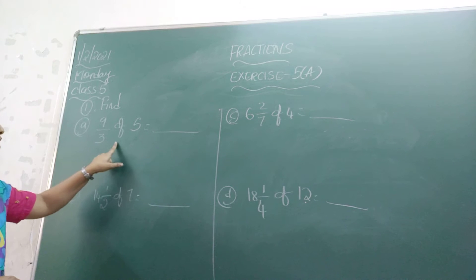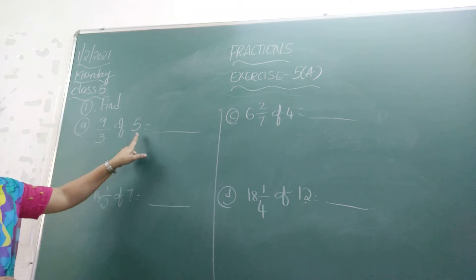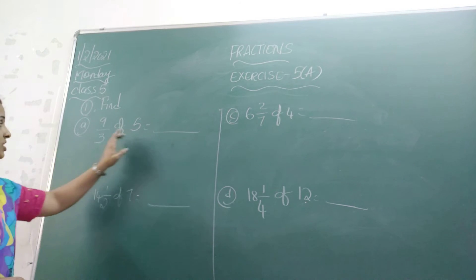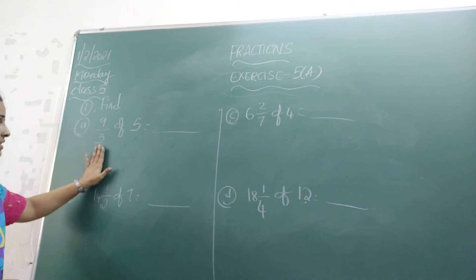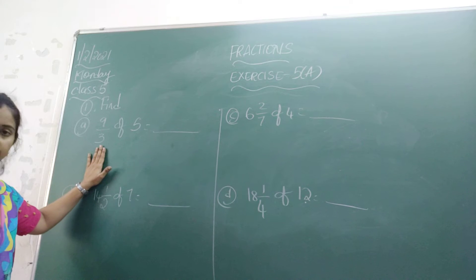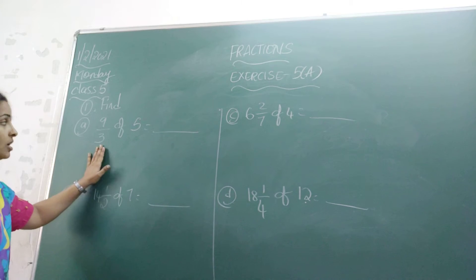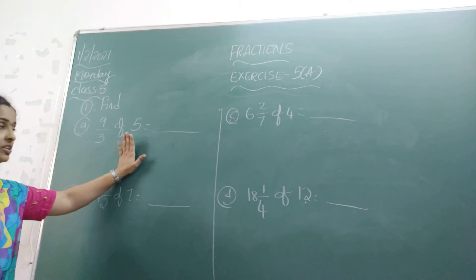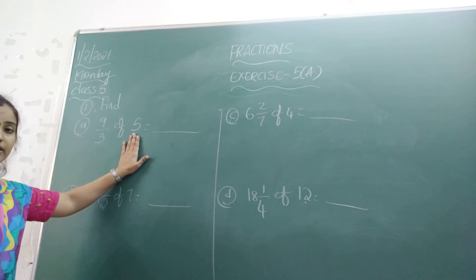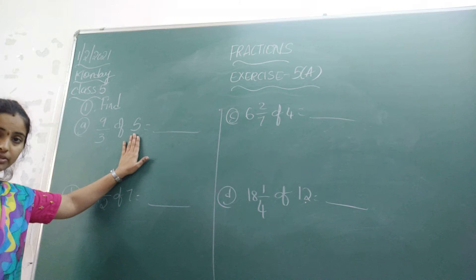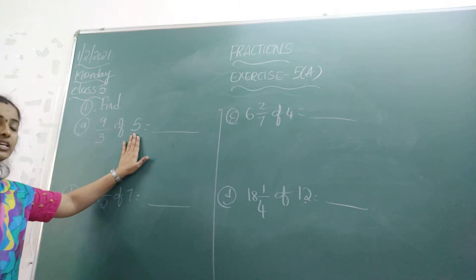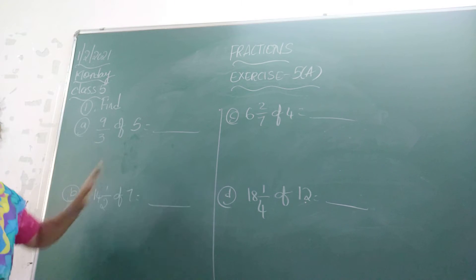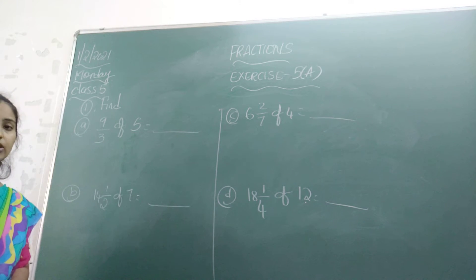9 by 3 of 5 is equal to what? Here, 9 by 3 is a fraction of 5. What is 5 here? 5 is a whole number. Now we need to multiply.